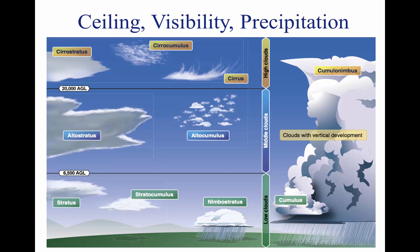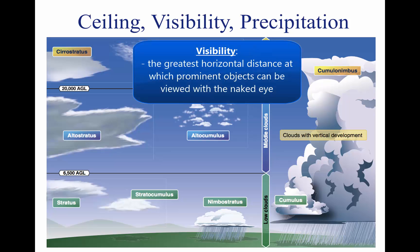Closely related to cloud cover and reported ceilings is visibility information. Visibility refers to the greatest horizontal distance at which prominent objects can be viewed with the naked eye. Current visibility is also reported in METAR and other aviation weather reports, as well as by automated weather systems. Visibility information, as predicted by meteorologists, is available for a pilot during a pre-flight weather briefing.